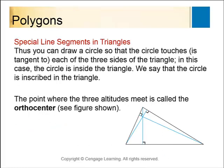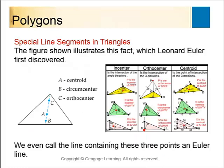The place where the three altitudes of a triangle meet is called the orthocenter. A really cool fact: if you find the incenter, orthocenter, and centroid of a triangle, all three of those points will be collinear — they all lie on the same line. Very cool and unexpected.